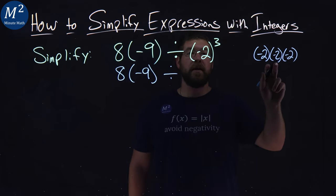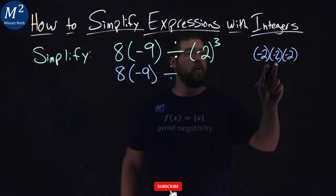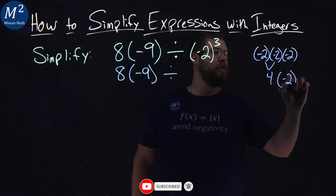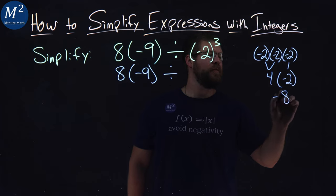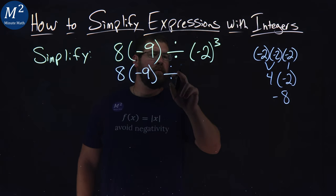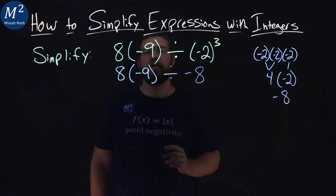Negative 2 times negative 2 comes out to be positive 4. Bring down the negative 2. And then 4 times negative 2, so you can see here, is negative 8. So negative 2 to the third power is negative 8.